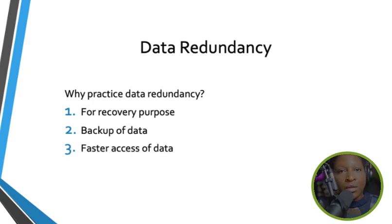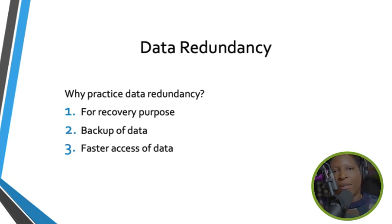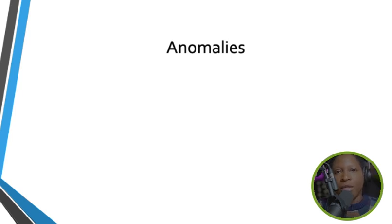Another reason data redundancy is good is faster data access. For example, you may want a data center in Toronto, one in New York, and one in Vancouver — so data can be accessed quickly by nearby users. Another reason is easier data updates. When working with databases, you may encounter errors called anomalies — irregularities or inconsistencies in your database.